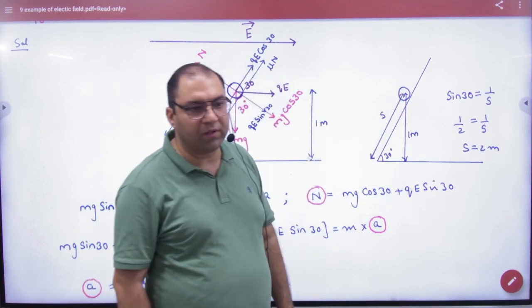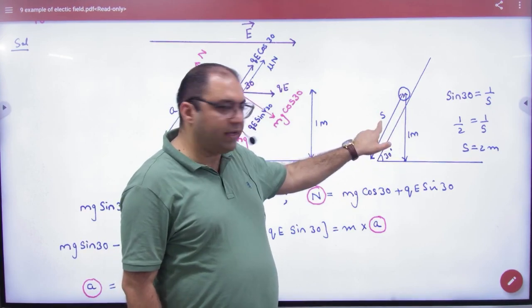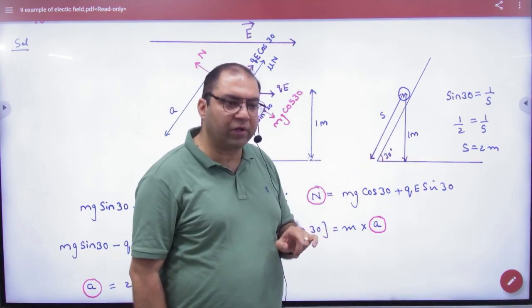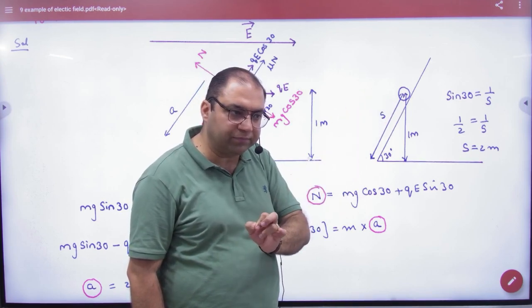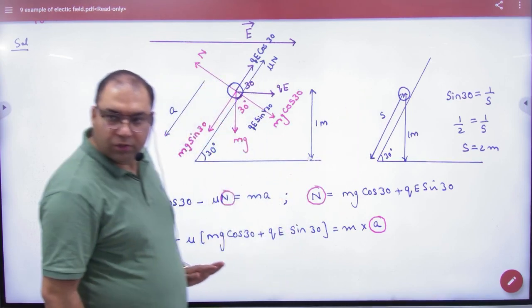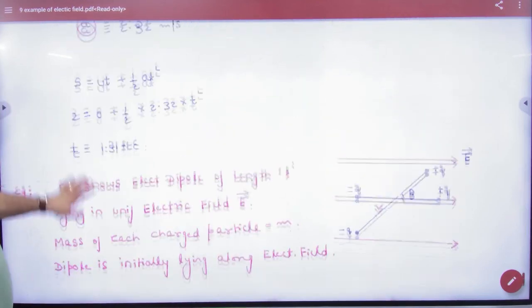I need S. Sin 30 degrees equals 1 by S. S value is 2 meters. The particle travels how far? 2 meters.